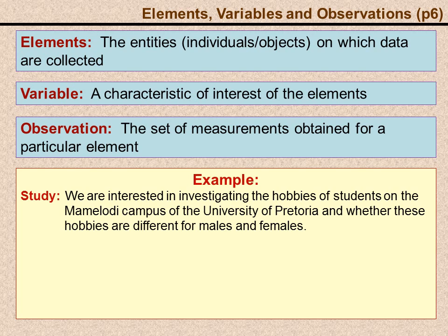Let's say we are interested in investigating hobbies of students, specifically on the Mamelodi campus, and we are interested in seeing whether hobbies are different for males and females. Our elements, in this case, would be the entities in which we are interested and on whom we want to collect the data. Here, we can see that these are clearly the students specifically on Mamelodi campus.